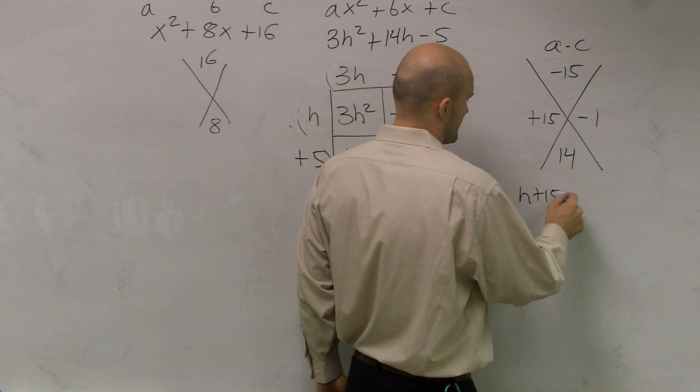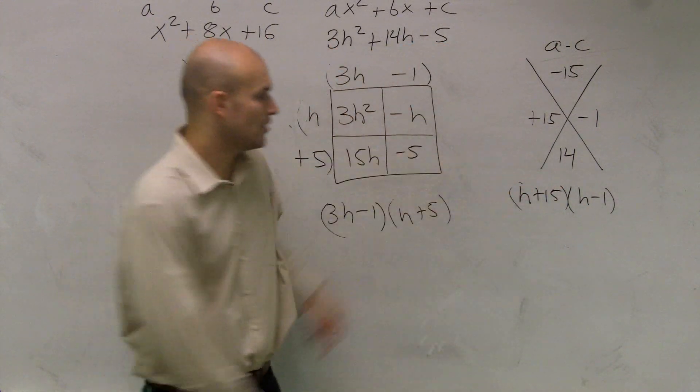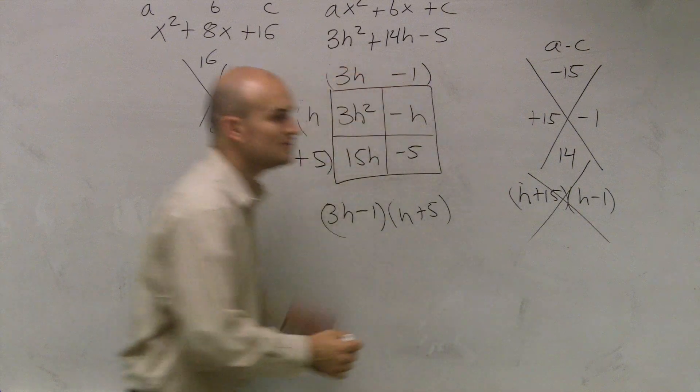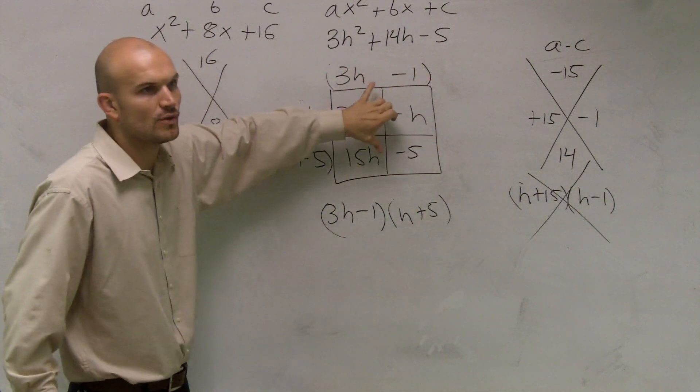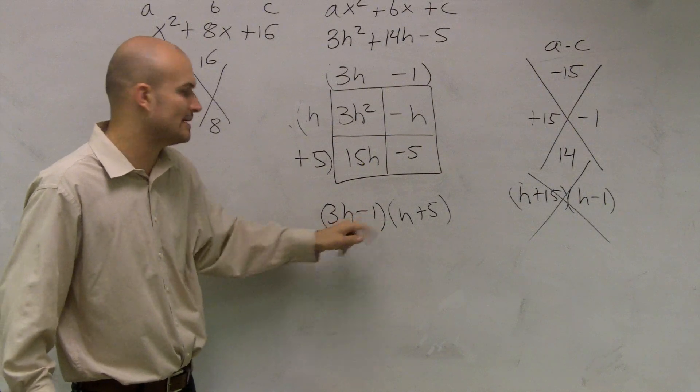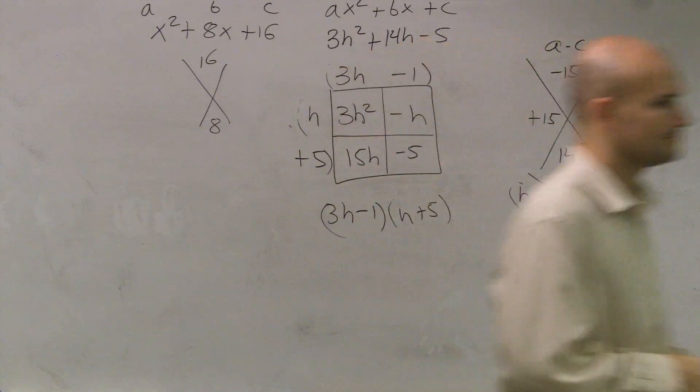Everybody wants to do this. You guys, you got to understand that that is not the answer. Everybody wants to do that. You got to use the box. If you're not understanding the grouping technique, put them in a square and then factor them out to get 3h minus 1 times h plus 5. Okay? Good.